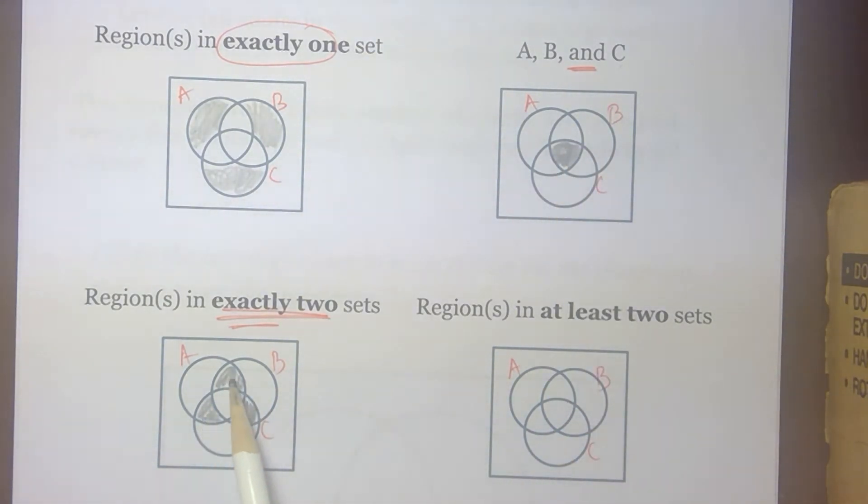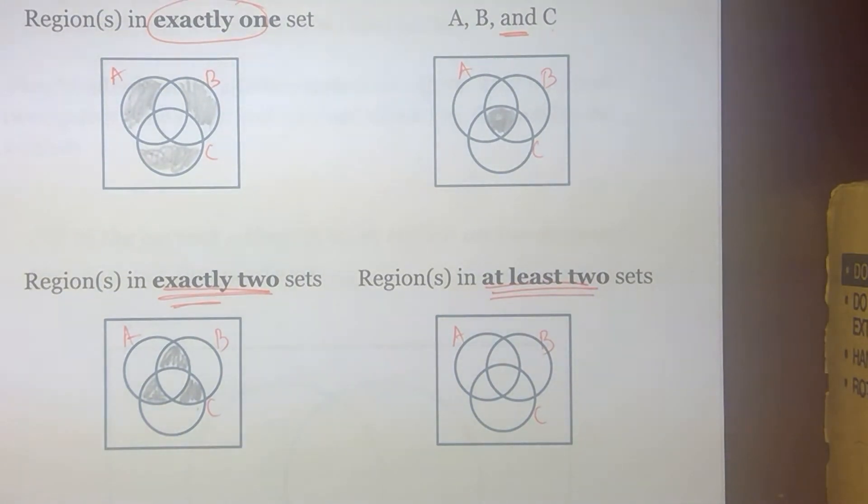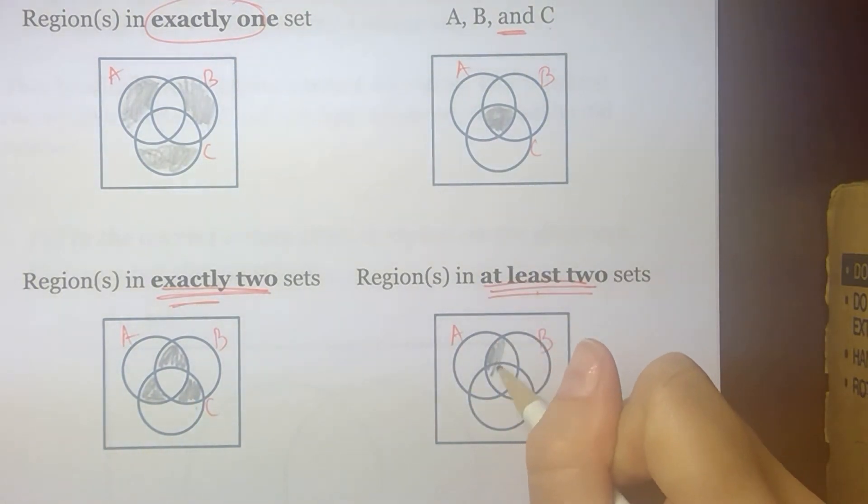Now, exactly two and at least two are not the same thing. Exactly two means two. At least two means two or more. Well, for our purposes, the only more would be three. So if it's in at least two, it's in two or three sets. So for this wording, we shade all four of those intersection regions.